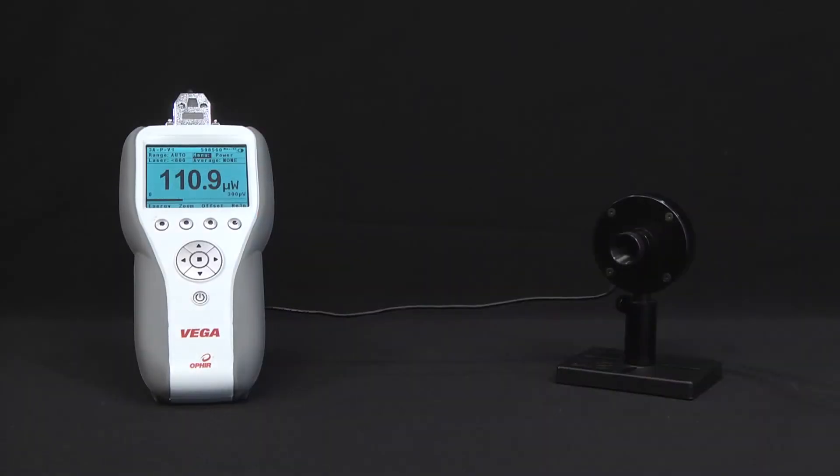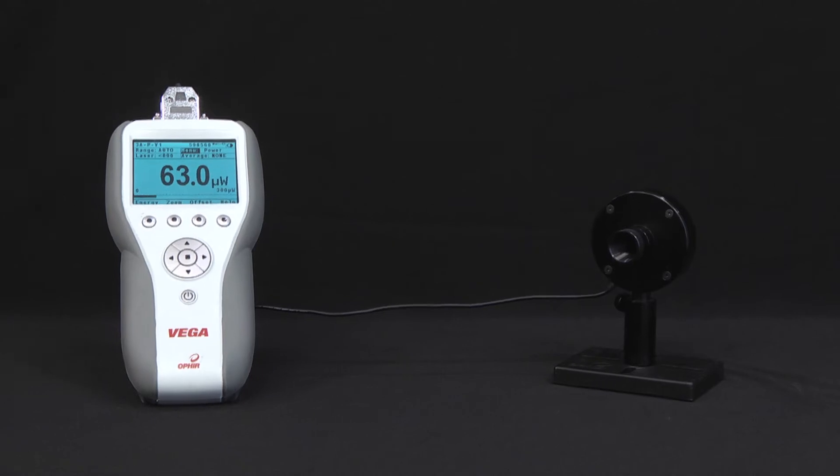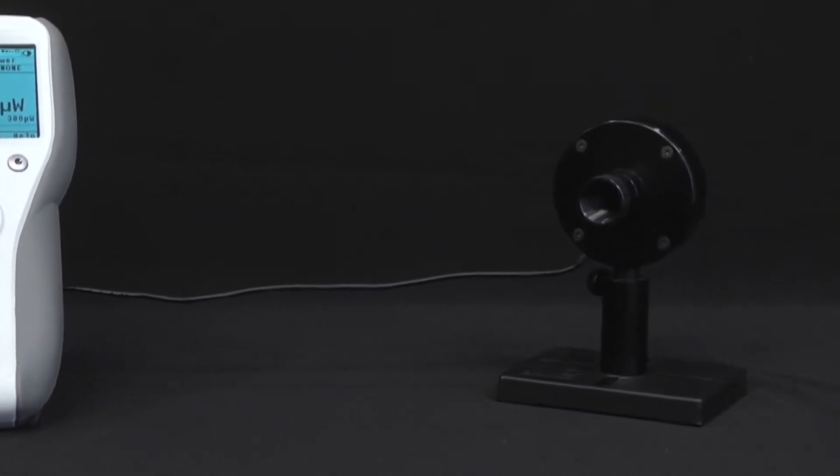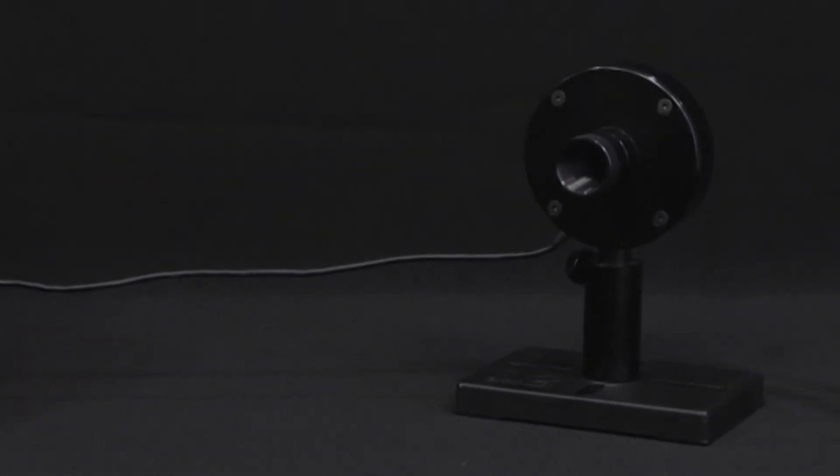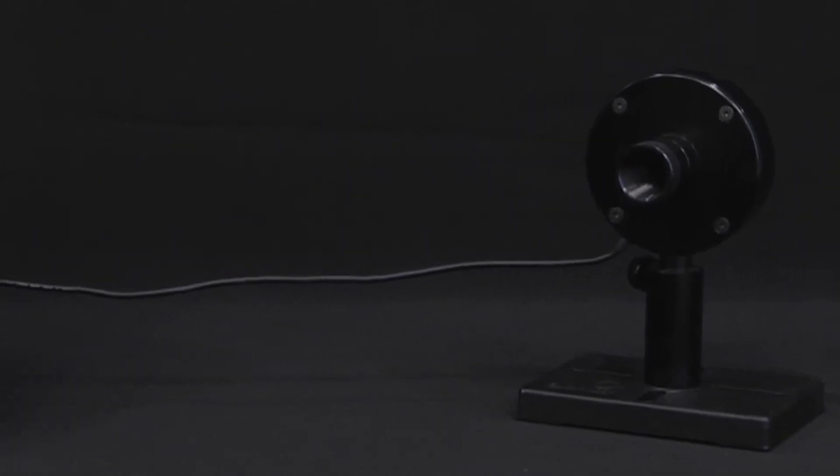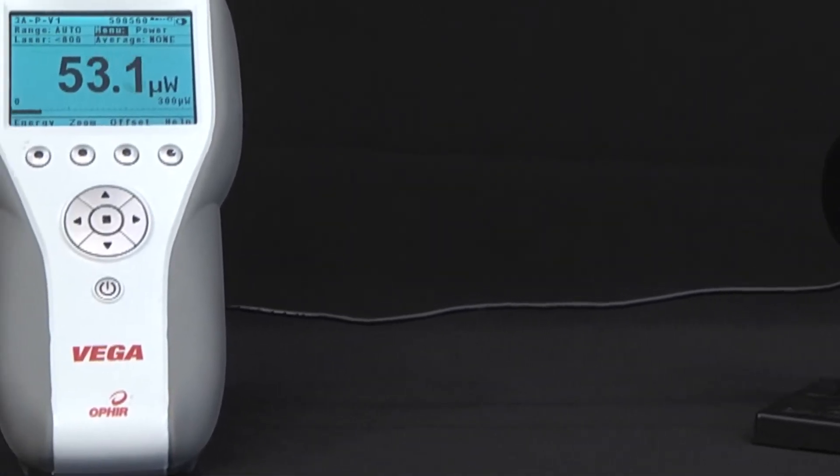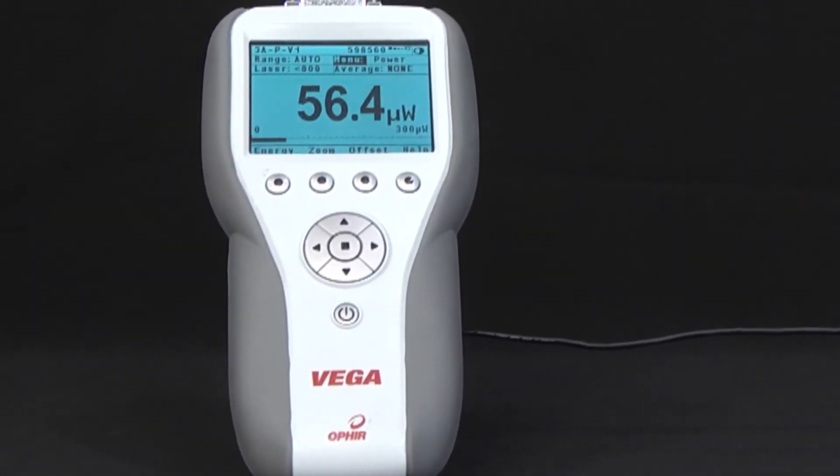In general a laser power measuring instrument consists of a sensor and a meter. The sensor is the front end which receives the laser beam and generates some sort of electrical signal that represents its power. The meter processes and outputs the result, for example as a numeric display that a human user can read.